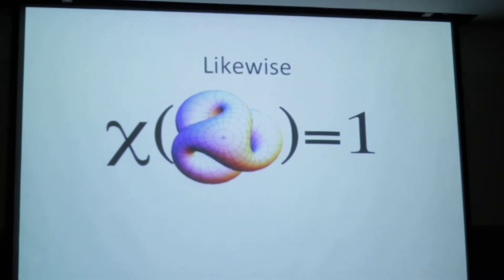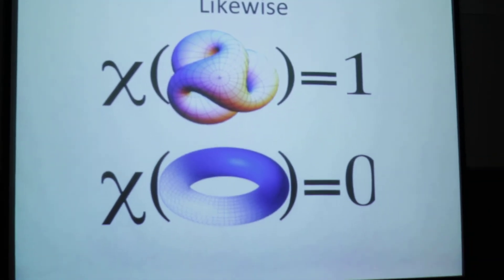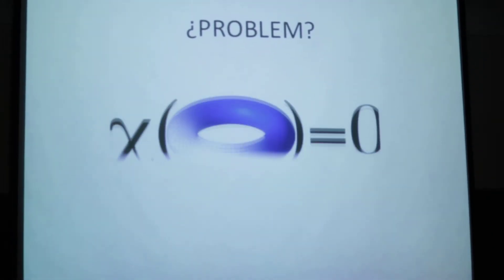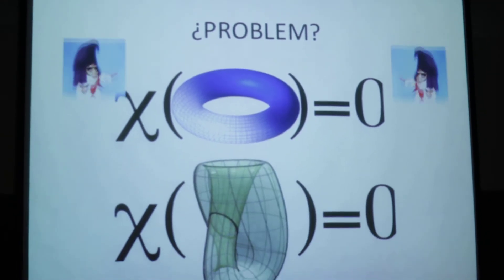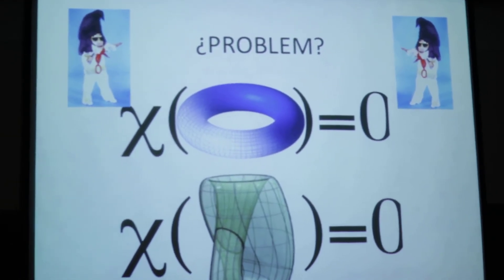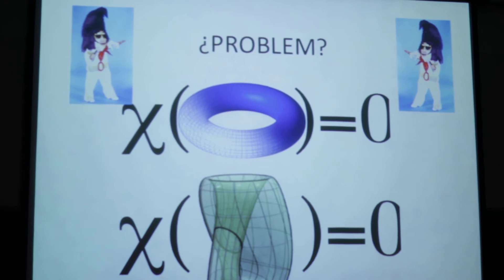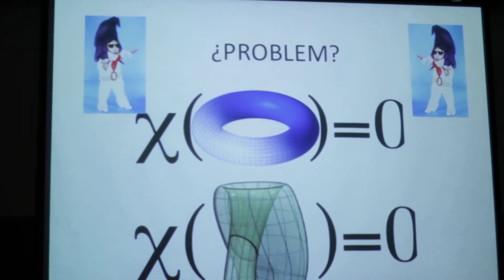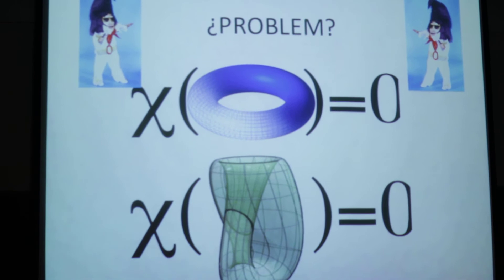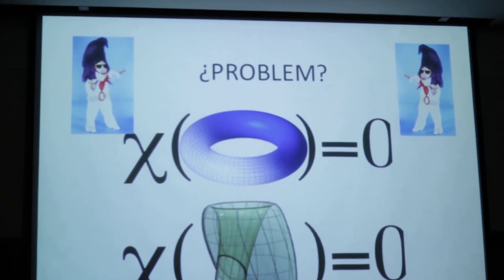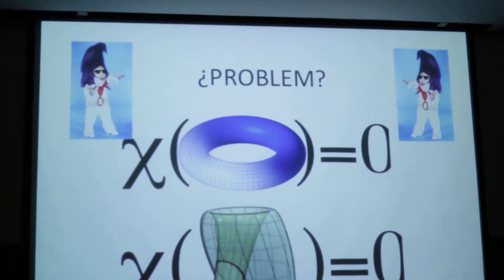Likewise, Freaky X of Boys surface is 1. Freaky X of a donut is 0. But oh no, problem! Freaky X of a donut and a Klein bottle are both 0. So in this case, we can't distinguish between them, even though they are obviously different. And so we need to think differently. We need to think deeper, I mean. How are they obviously different?